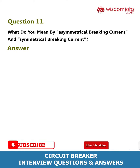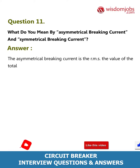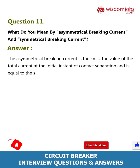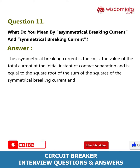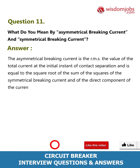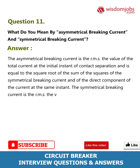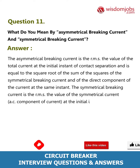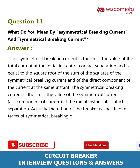Answer: The asymmetrical breaking current is the RMS value of the total current at the initial instant of contact separation, and is equal to the square root of the sum of the squares of the symmetrical breaking current and the direct component of the current at the same instant. The symmetrical breaking current is the RMS value of the AC component of current at the initial instant of contact separation. The rating of the breaker is specified in terms of symmetrical breaking current and voltage.